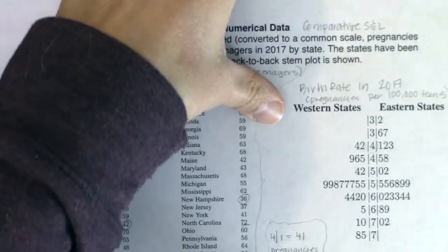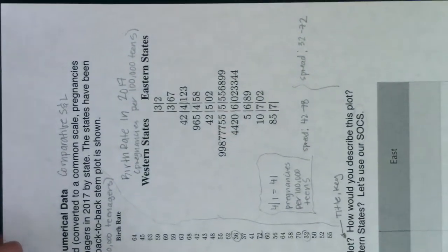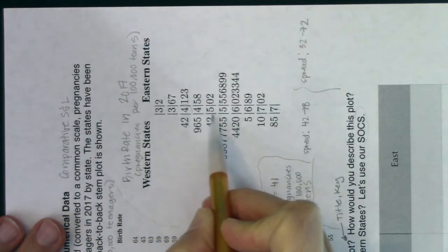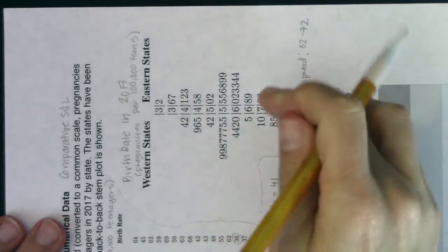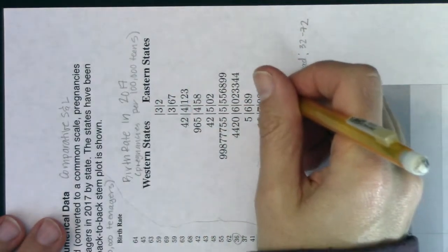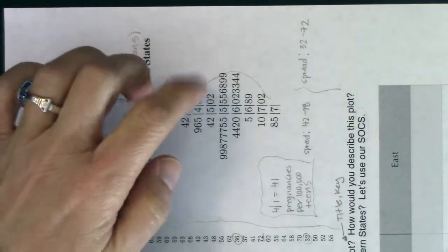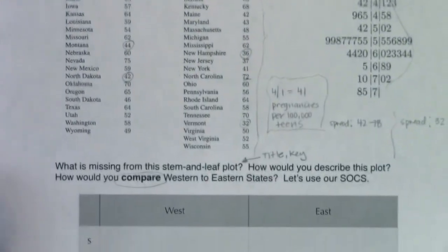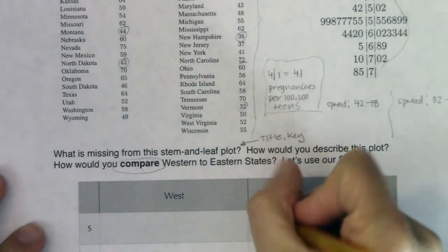Let's start with shape. I'll start with the eastern states. I've got a stem-and-leaf plot and I'm going to rotate it 90 degrees. Looking at the eastern states, my x-axis is going low to high as I move left to right. If I try to draw a fake distribution over that, to me that looks a little bit skewed left. I could see the argument to say it's roughly symmetric, but this is definitely not skewed right. I'll fill in: the eastern states' shape is skewed left.